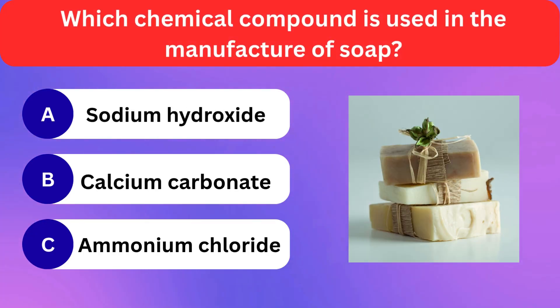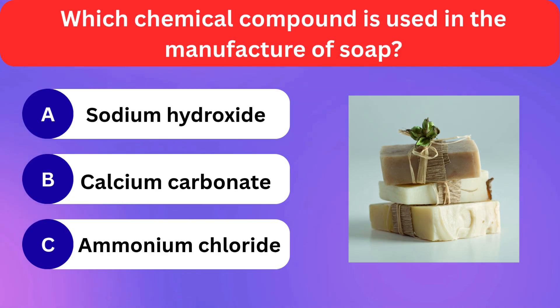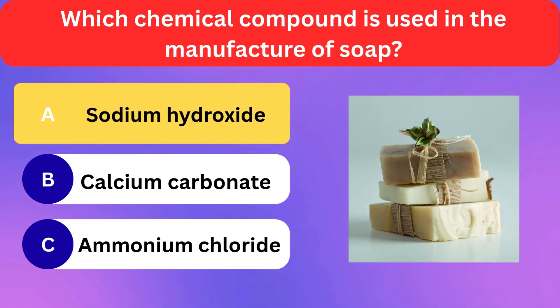Which chemical compound is used in the manufacture of soap? Sodium hydroxide, Calcium carbonate, Ammonium chloride. Correct answer is sodium hydroxide.